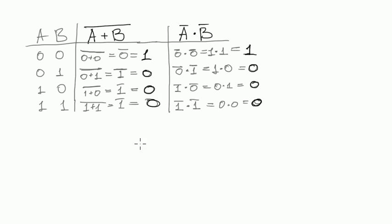And let's write it down. A plus B, the whole expression negated, is equal to A negated multiplied by B negated, where each variable is negated.